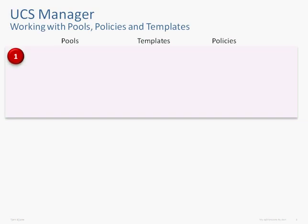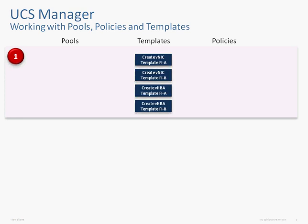The first thing we'll be looking at is connectivity from the blades. We'll create templates for virtual NICs and virtual HBAs. Within UCS, there is always the concept of Fabric A and Fabric B, and we'll be creating VNICs dedicated for Fabric A and dedicated for Fabric B. For MAC addresses, we'll create a pool — one for Fabric A and one for Fabric B — so that the virtual NICs can pull the MAC addresses they need.